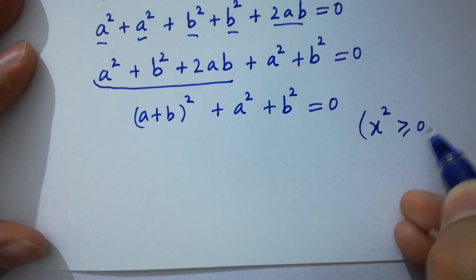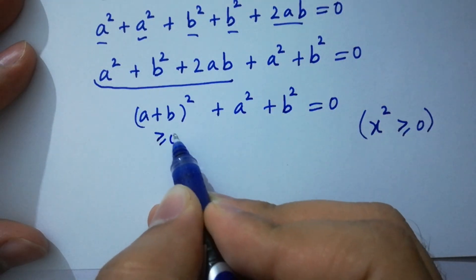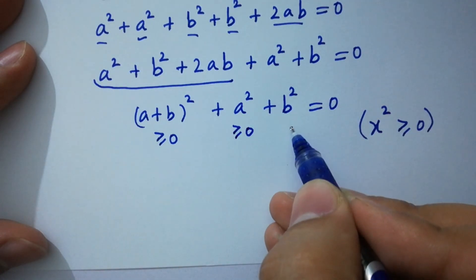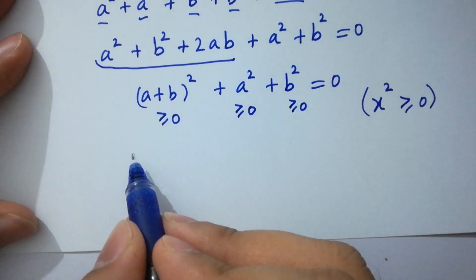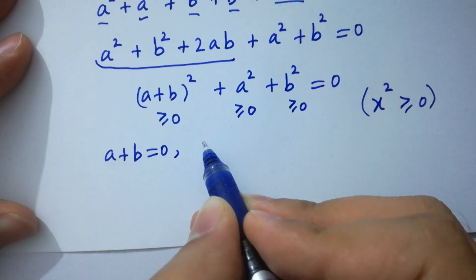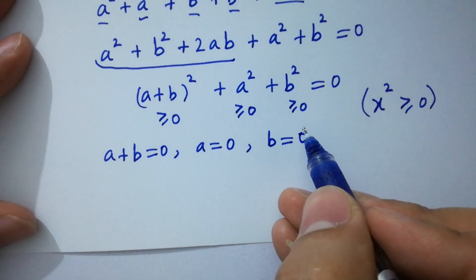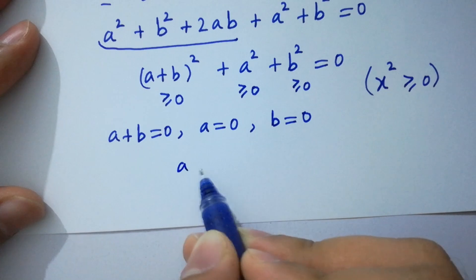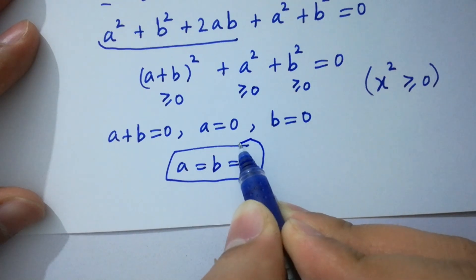Since x squared is greater than or equal to 0 for any real x, a plus b whole squared is greater than or equal to 0, a squared is greater than or equal to 0, and b squared is greater than or equal to 0. So a plus b equals 0, a equals 0, and b equals 0. Hence a equals b equals 0.